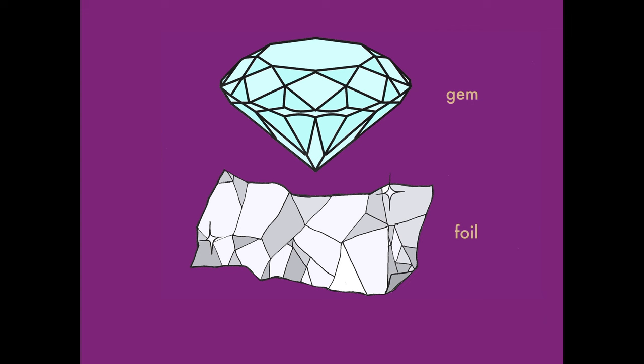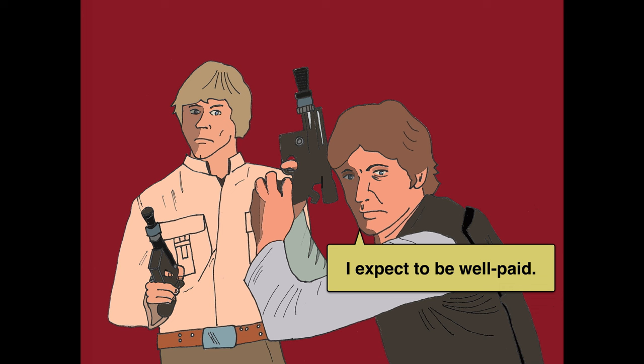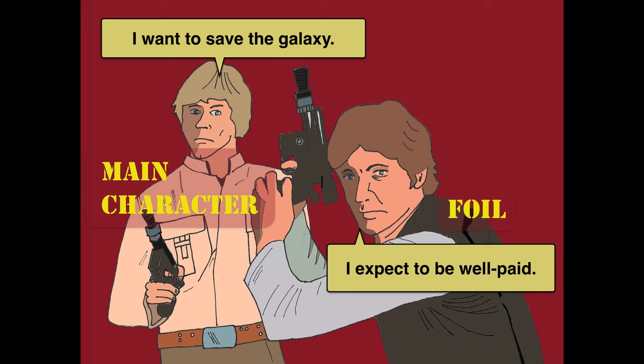Then there's the foil. This term comes from the practice of putting shiny foil on the bottom sides of gems so they reflect the light more and get sparkly and pretty. In terms of characterization, a foil is a character that contrasts with the main character in such a way that it makes us more aware of some important quality of the main character. I'm more inclined to think of Han Solo as Luke's foil. Han's world-weary experience makes us more aware of how eager and inexperienced Luke is. Han's primary interest in money contrasts with Luke's idealism. Han makes us understand Luke better because they contrast with one another.